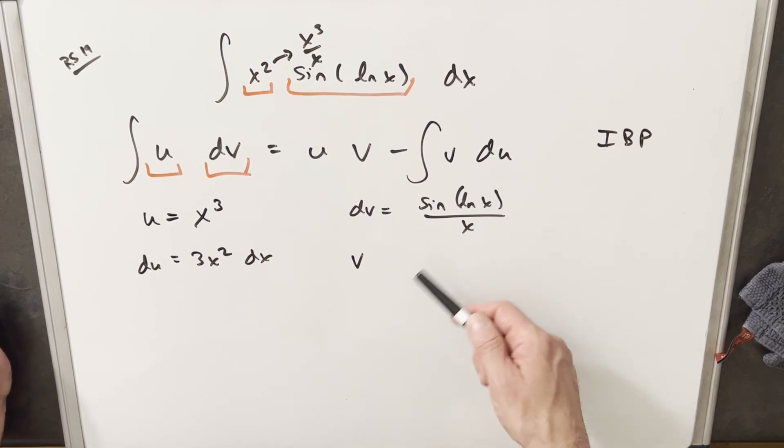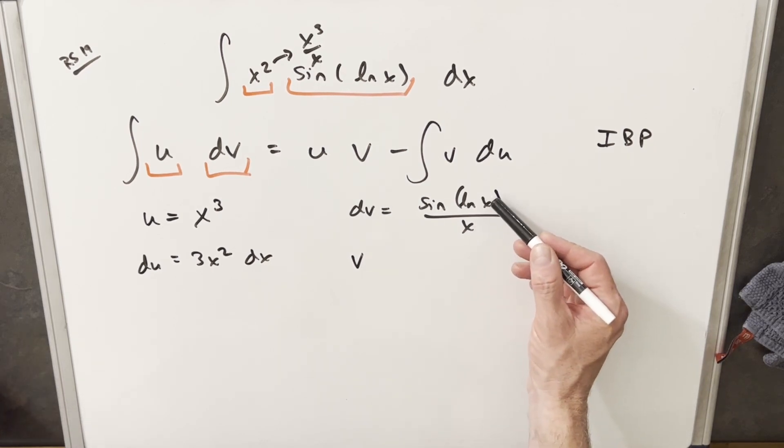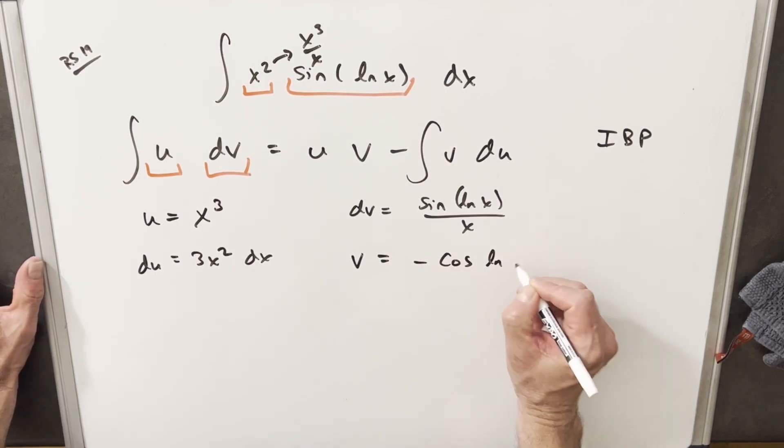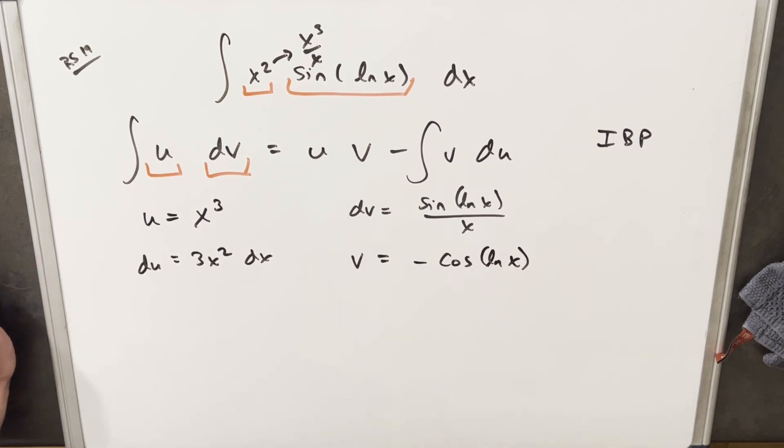If ln x is u, then the derivative of ln x is going to be 1 over x dx. So actually with this 1 over x, we have the derivative of ln x. So when I integrate this, I'm just going to get minus cosine of u or cosine ln x.